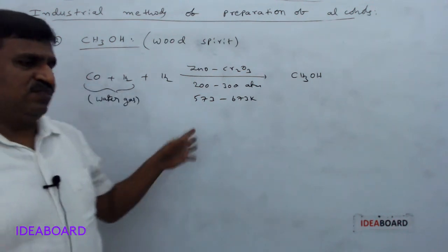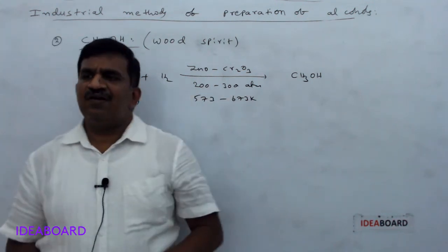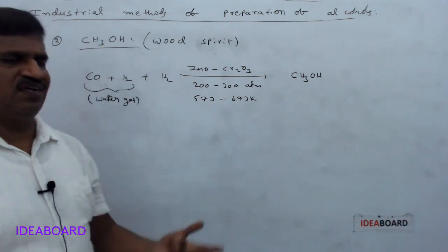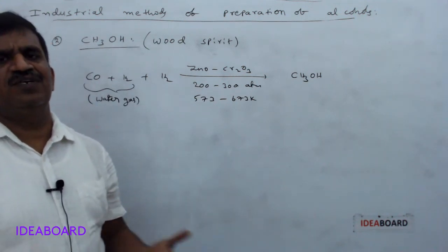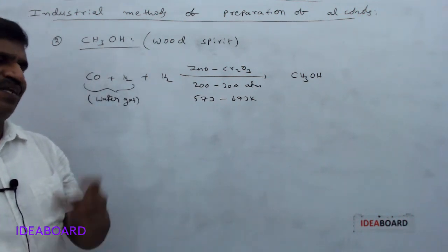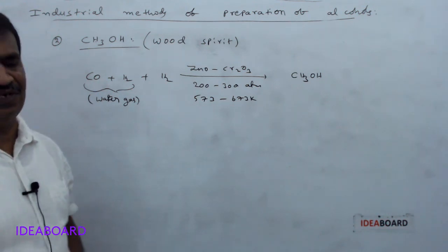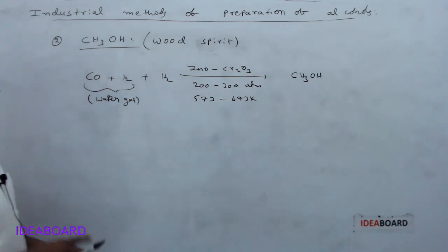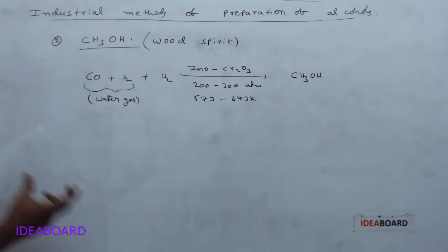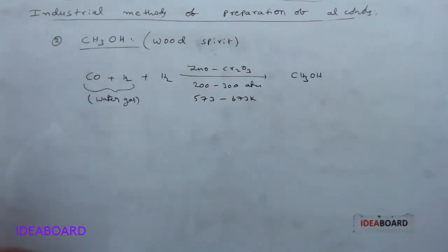Methyl alcohol is more poisonous and dangerous — it should be avoided for drinking. For drinking purposes, only ethyl alcohol is used, and only at low concentrations mixed with water. Drinking pure ethyl alcohol directly affects the liver and kidneys.